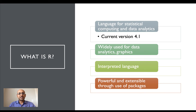So let's start off by asking the question: what is R? R is a programming language used for statistical computing and data analytics. It has a variety of features that get used for the purpose of data analysis. R was introduced in the early 1990s, and the current version is R 4.1. R is widely used in the domain of data analytics and graphics, but also gets used to analyze domain-specific data ranging from financial transactions to maritime biology.